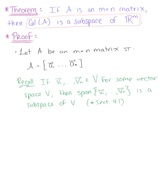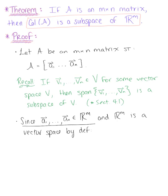Using this theorem, we observe that since the column vectors A₁ through Aₙ are in R^m, and R^m is a vector space by definition, we can conclude that the span of these column vectors is a subspace of R^m.